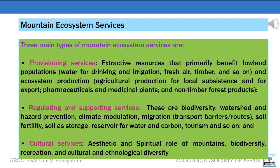Despite such inherent differences, mountains serve various ecosystem services. The three main types of mountain ecosystem services are: number one, the provisioning services. These are the extractive resources that primarily benefit lowland populations such as water for drinking and irrigation, fresh water, timber, air, and so on. The ecosystem production includes agricultural production for local sustenance and for export, pharmaceuticals and medicinal plants, and non-timber forest products.